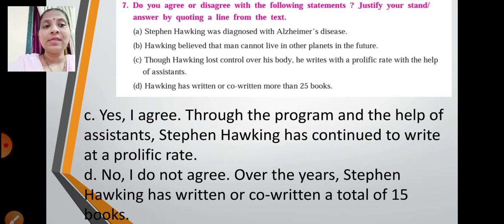Then Hawking has written or co-written more than 25 books. So no, it is wrong. No, I do not agree. Over the years Stephen Hawking has written or co-written a total of 15 books. So it is not 25 books but 15 books which Stephen Hawking has written or co-written.